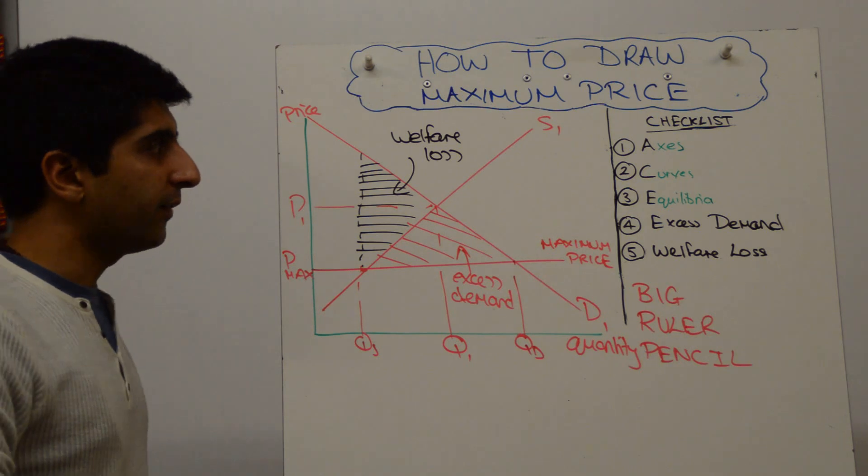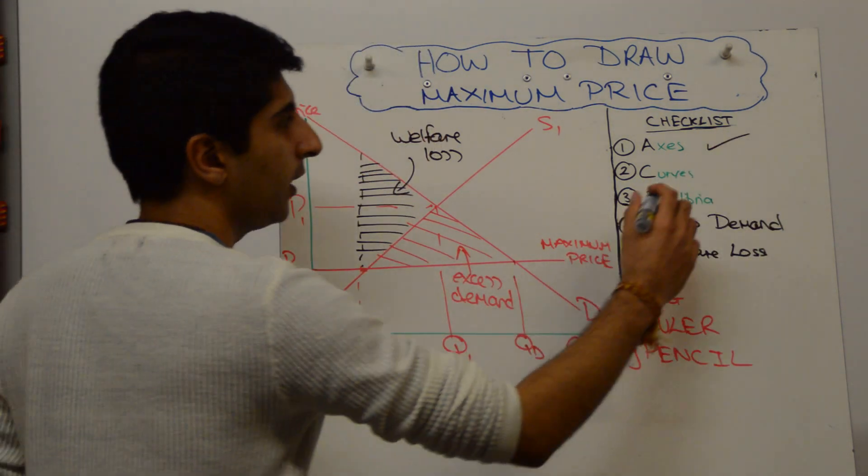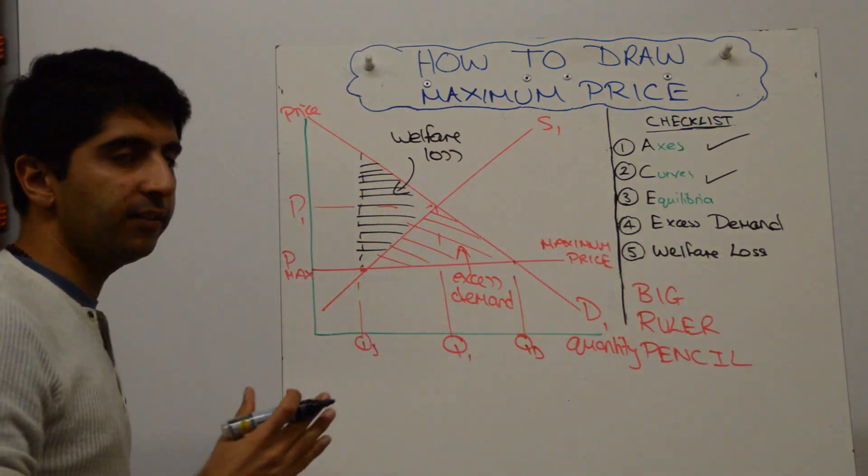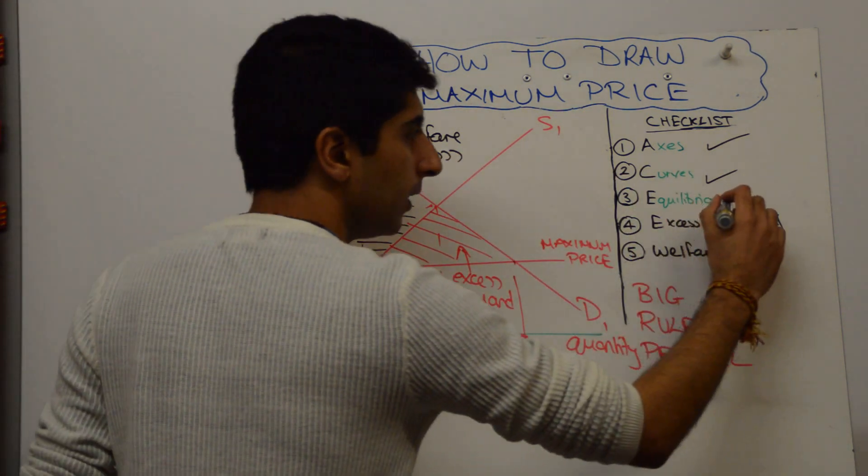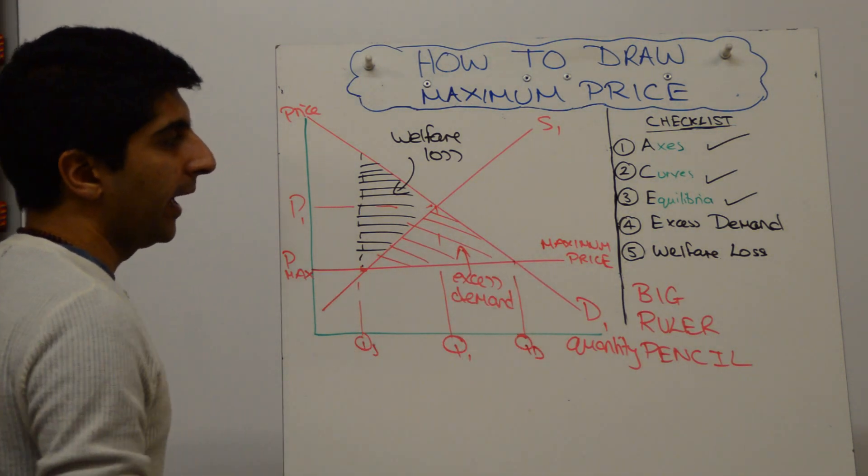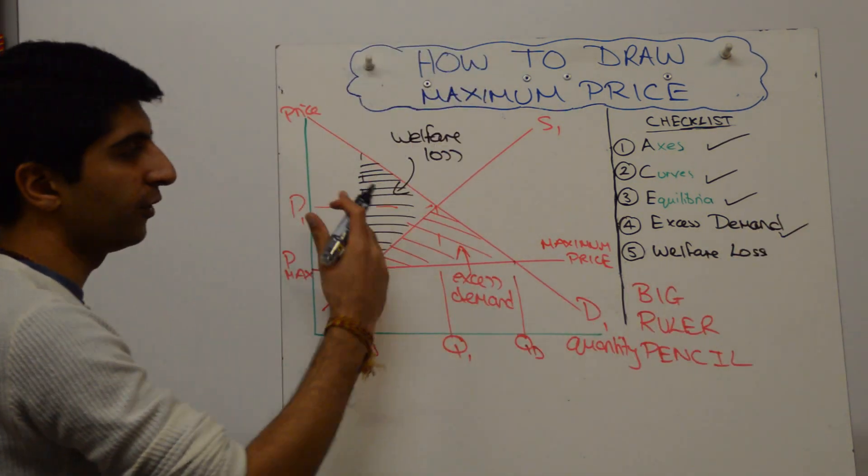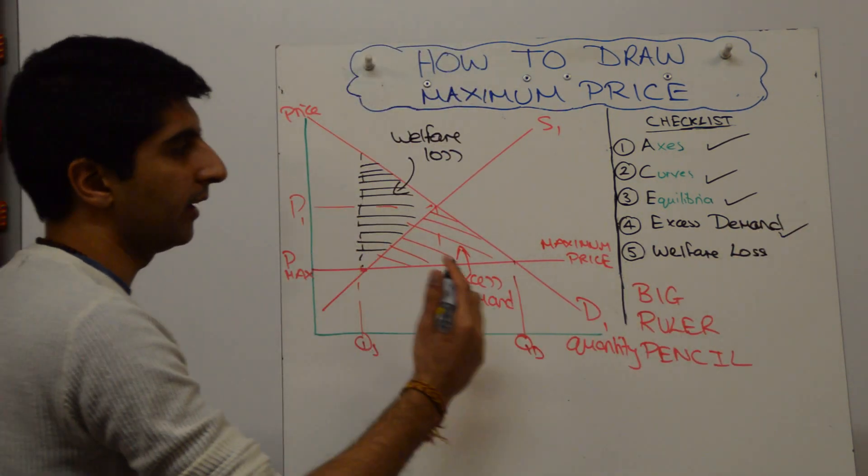Then always make sure you go through your checklist. Have you labeled your axes? Yes, absolutely. Have we labeled our curves? Yes, all of them have been nicely labeled. Equilibria, whether efficient or inefficient, have been labeled correctly. The excess demand is very clearly done and correct. And the welfare loss is very clearly labeled and done here.